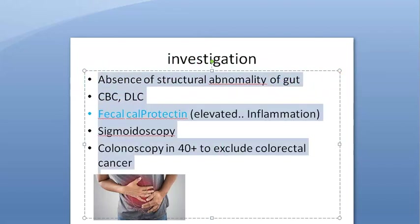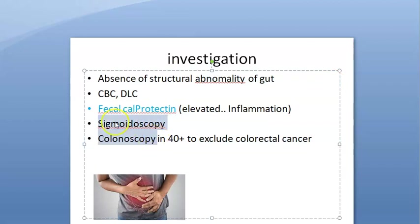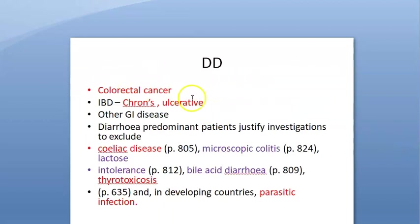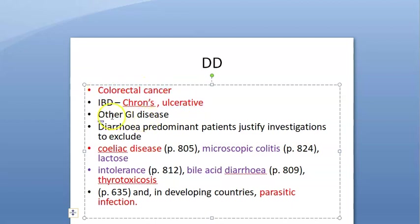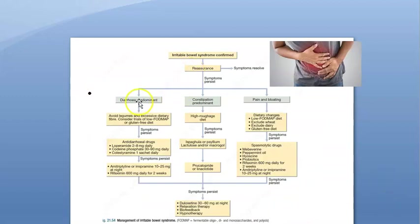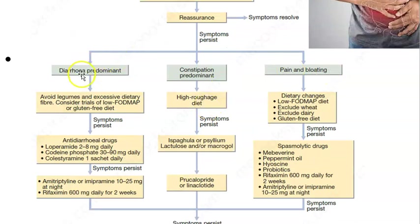Investigations include checking for structural gut abnormalities via sigmoidoscopy or colonoscopy to rule out colorectal cancer, blood tests, and fecal calprotectin (elevated = inflammation). Differential diagnoses include colorectal cancer, Crohn's, ulcerative colitis, celiac disease, microscopic colitis, lactose intolerance, bile acid diarrhea, thyrotoxicosis, and parasitic infestation. Treatment starts with patient reassurance.